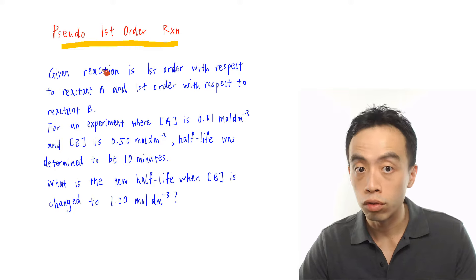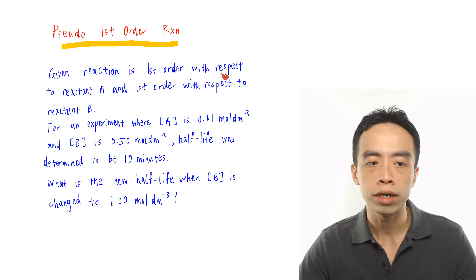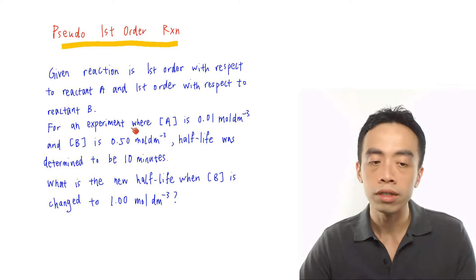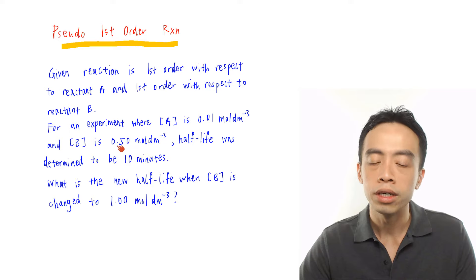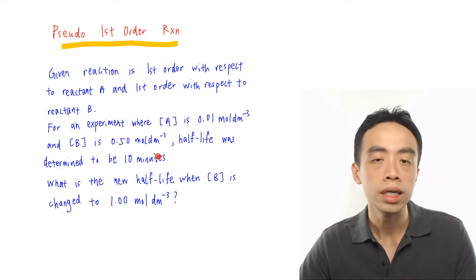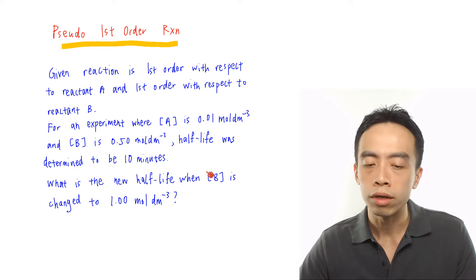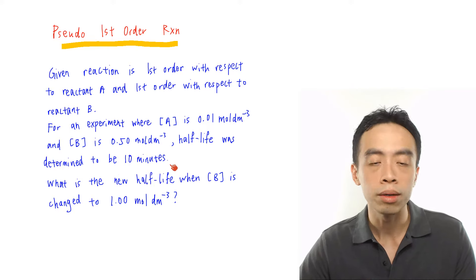Let's have an example involving pseudo-first-order reactions. Given a reaction is first-order with respect to reactant A, and also first-order with respect to reactant B. For a given experiment, where the concentration of A is 0.01 mol per dm³, and the concentration of B is 0.50 mol per dm³, the half-life was determined to be 10 minutes. The question is: what is the new half-life when the concentration of B is changed to 1 mol per dm³?